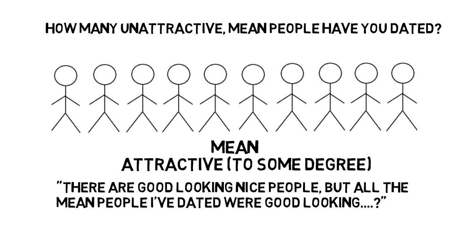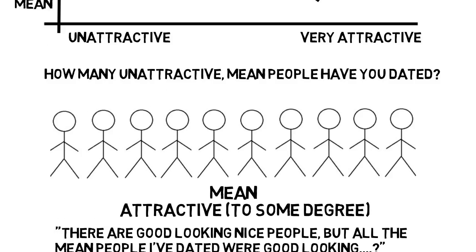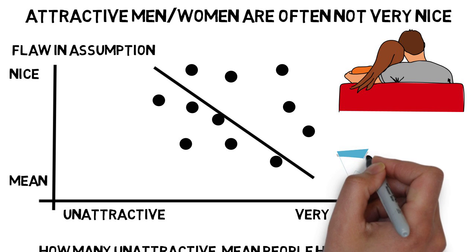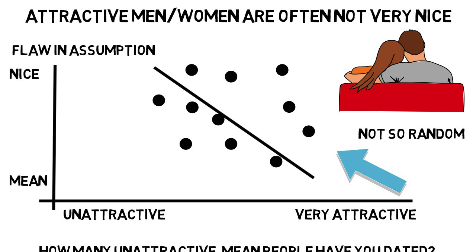So you might admit there are good looking nice people, but all the mean people you've dated were good looking — and to that we can say, of course that's true, how could it not be? This information doesn't mean this assumption is totally wrong; it just means we aren't looking at the full picture. When you gather data you may think is random, sometimes it's not so random — you chose your dates maybe because of attractiveness or personality, and anyone else was filtered out, meaning your data isn't so random after all.